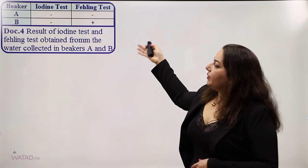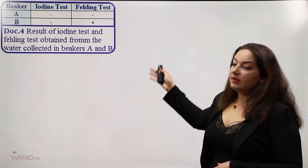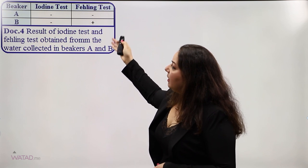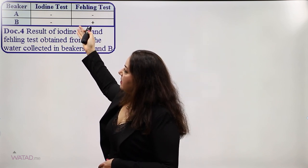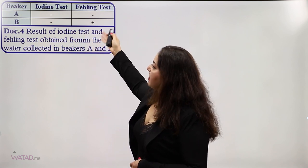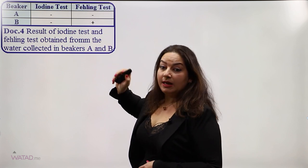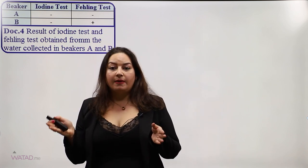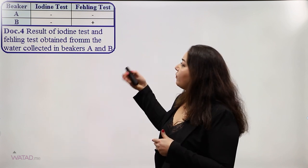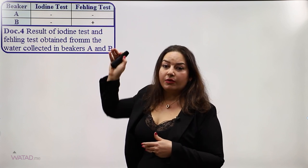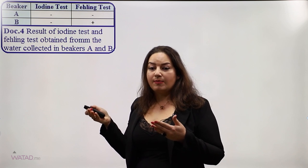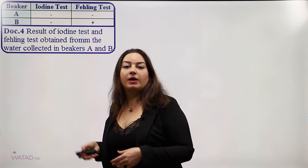In Document 4, we see the results of iodine and Fehling solution tests from water collected in beakers A and B. At the beginning, the iodine test is negative for both beakers A and B. The Fehling test is negative for beaker A but positive for beaker B, meaning the permeable bag containing starch and saliva together was able to transform the starch. In the presence of saliva, which contains a specific enzyme, starch was transformed into a reducing sugar.